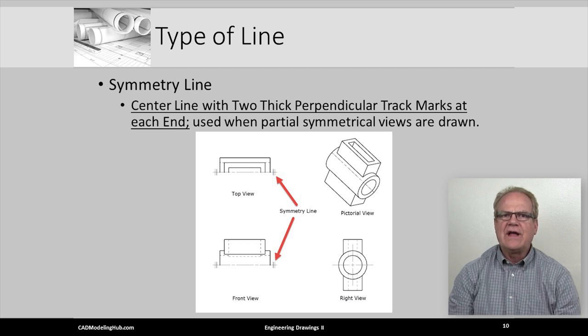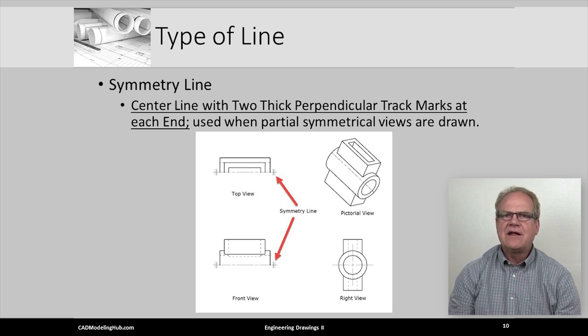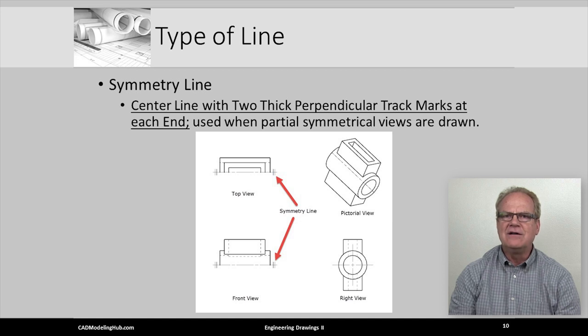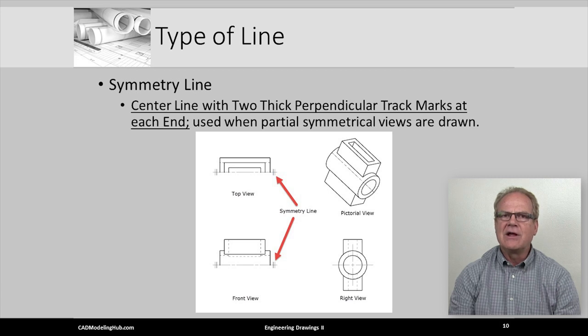Symmetry lines use as their base a standard, thin center line, but add two thick track marks at each end of the center line. The symmetry line has two different applications. The first application is where just half of the orthographic view is provided, stopping abruptly at the symmetry line as illustrated in this figure. The other application is for use in half-image dimensioning. We will discuss more on this topic in a later lecture.